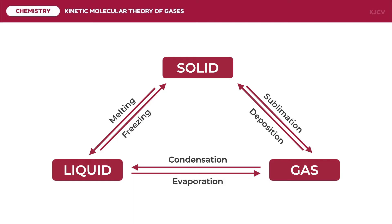We can see the energy changes as the phase of matter changes. Solids, which are in order, are transformed into liquids which are more energetic. This means that we added energy in the form of heat to melt solids. The opposite happens as liquid becomes more orderly as a solid because we reduce the amount of kinetic energy through the process of freezing. When we allow a phase of less energy or more order to a phase of more energy but less order, we reduce the kinetic energy in condensation, add energy in evaporation, add energy in sublimation, and remove energy in deposition. This means that the kinetic energy of the particles is dependent on the heat energy.